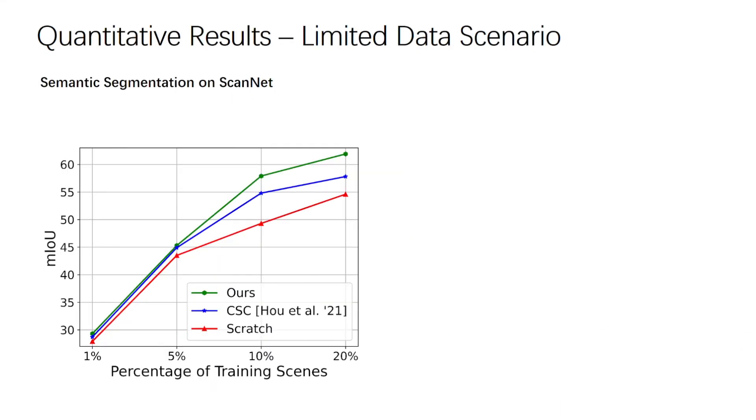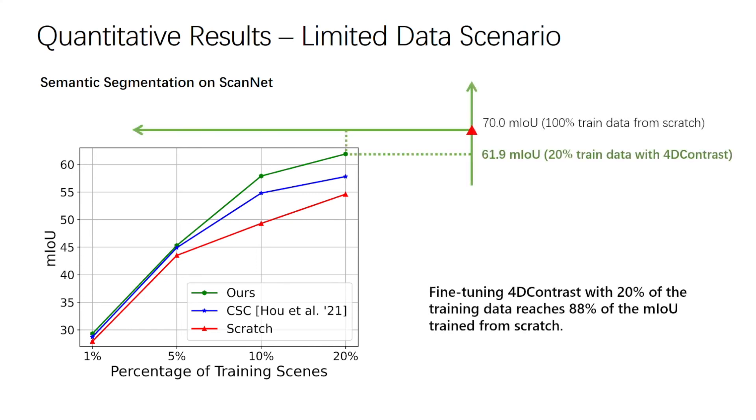Our approach can provide notably improved results in data-scarce scenarios. Fine-tuning 4D contrast with only 20% of the training data already recovers 88% of the mean IOU of training from scratch.